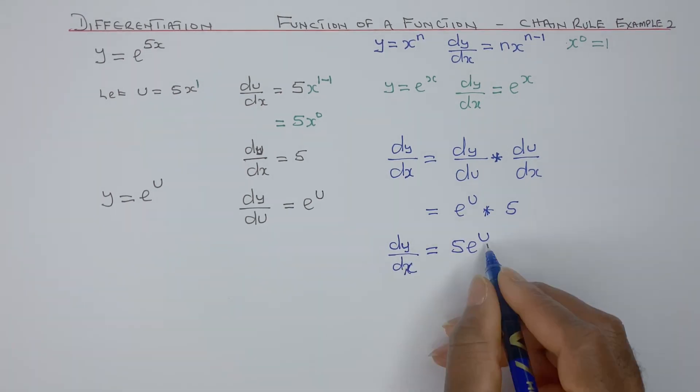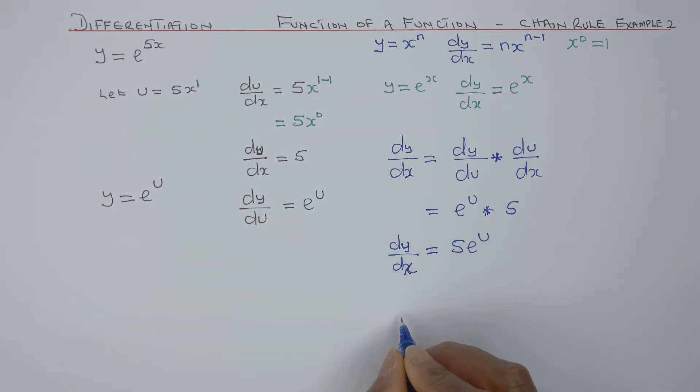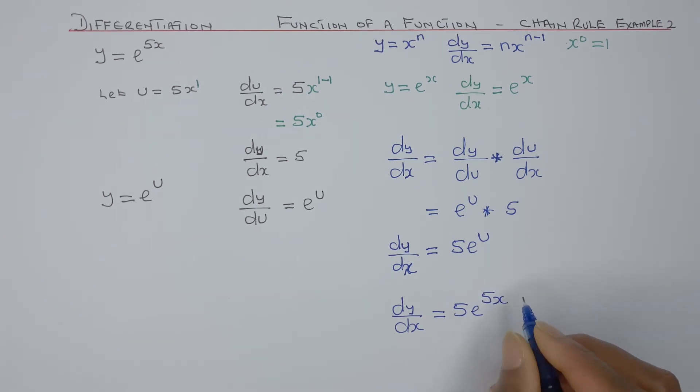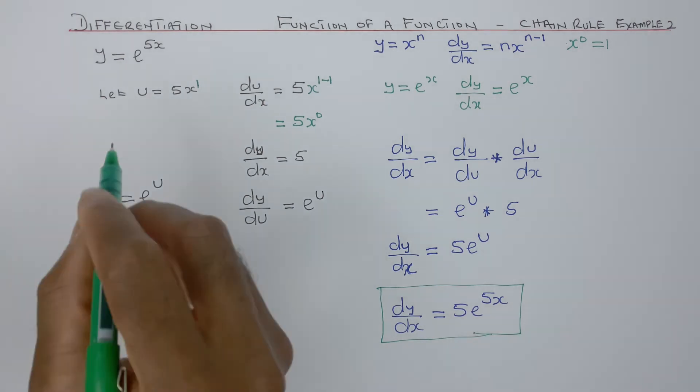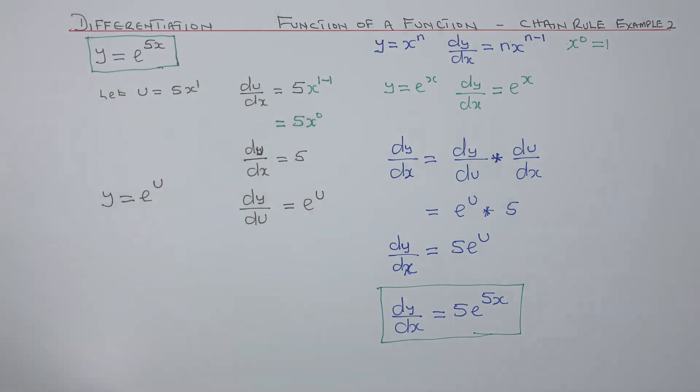But we know what u is. u is 5x, so I can write dy/dx equals 5e to the power of 5x. So that's the derivative of y equals e to the power of 5x.